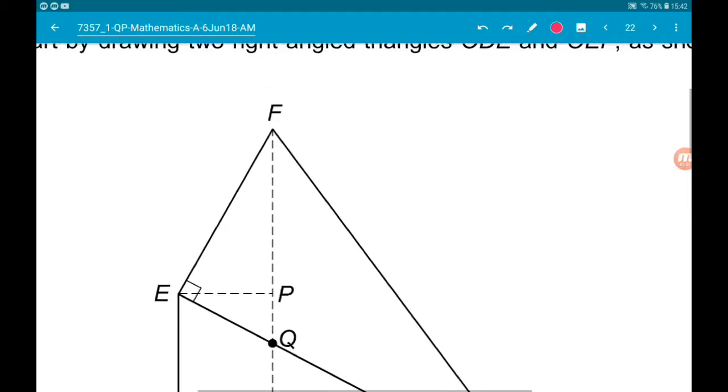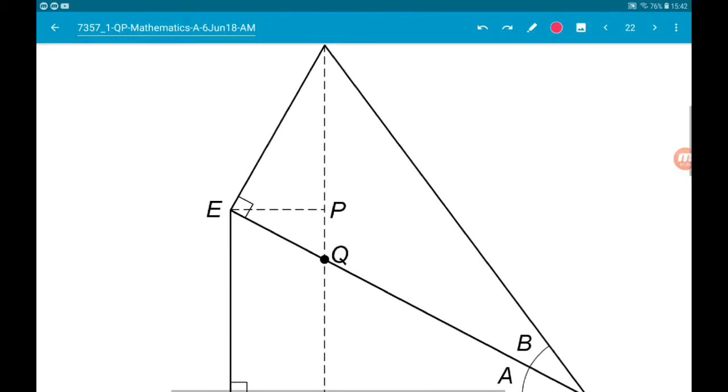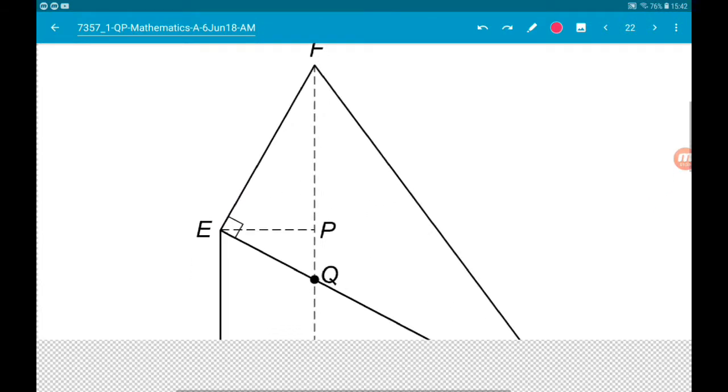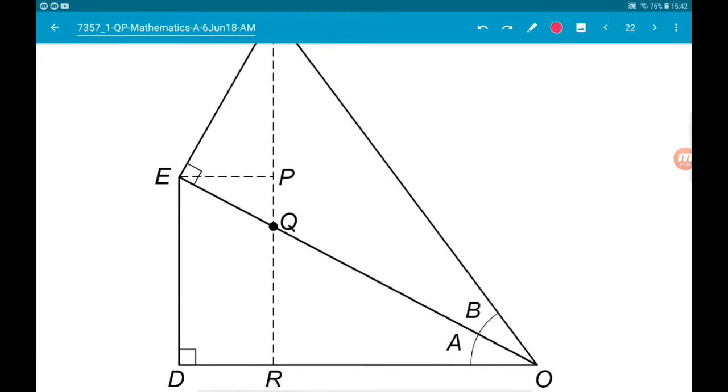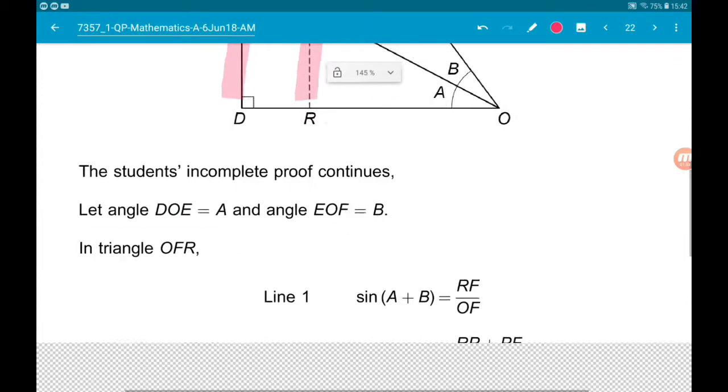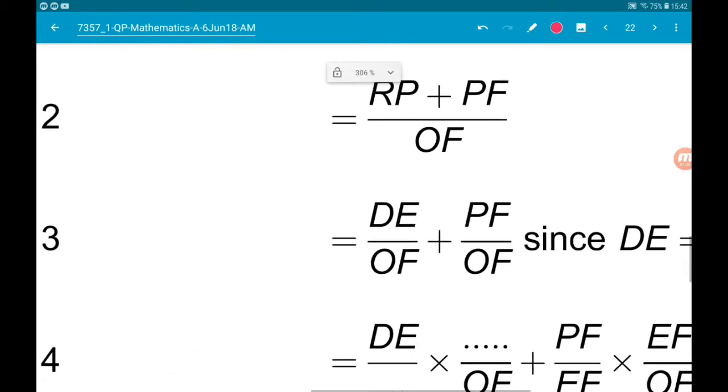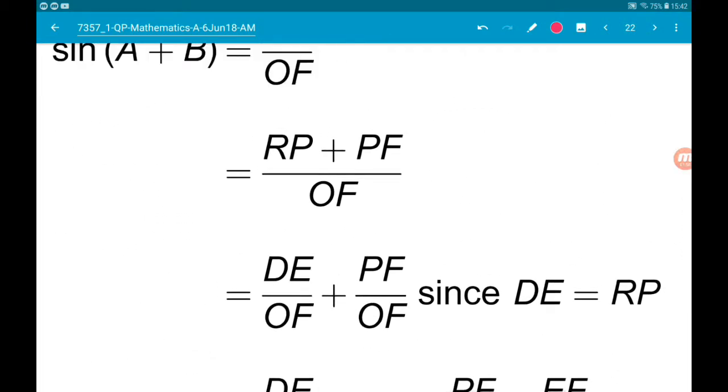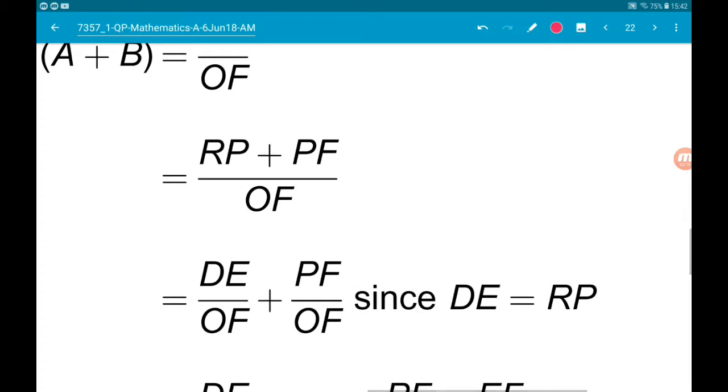So they're saying that DE is equal to RP. Now RP and DE are these two lines here. So they are indeed equal. So when we've changed from RP plus PF over OF, then we are absolutely fine in what we've done there.